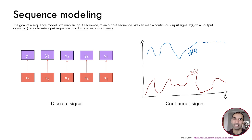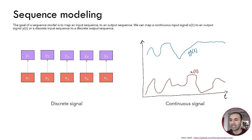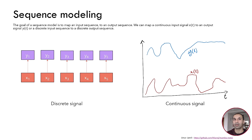The input sequence can be a continuous signal, in which case we want to map it to an output continuous signal, or it can be a discrete input signal and we want to map it into a discrete output signal. For example, a continuous signal could be audio and a discrete signal could be text. Most of the time we work with discrete signals — even with audio, because we sample the audio file over time. For language modeling we have a discrete input because we have a finite number of tokens and we want to map it to an output sequence of tokens.